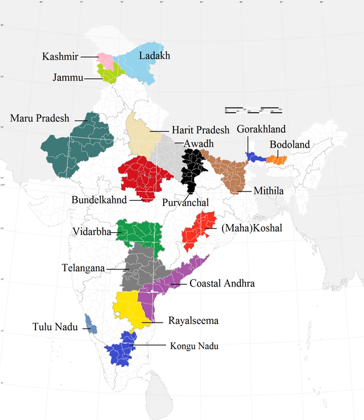Several new states and union territories have been created out of existing states since 1956. The Bombay Reorganization Act split the Bombay state into the present-day states of Gujarat and Maharashtra on 1 May 1960 on a linguistic basis. The state of Nagaland was created on 1 December 1963. The Punjab Reorganization Act 1966 carved out a new Hindi-speaking state of Haryana from the southern districts of Punjab state, and transferred the northern districts to Himachal Pradesh.